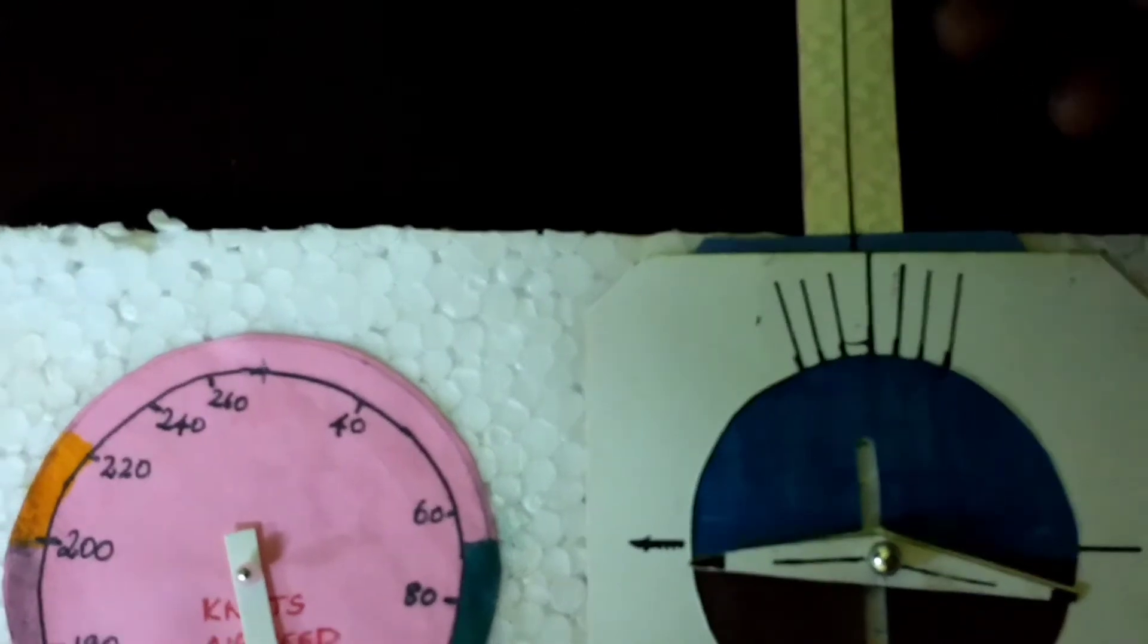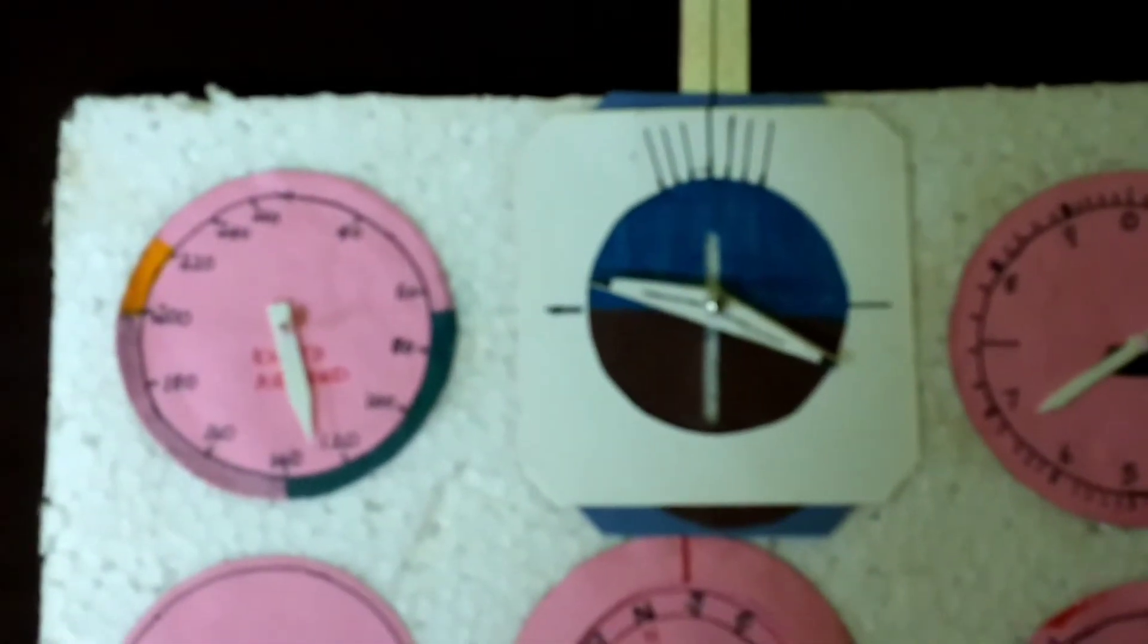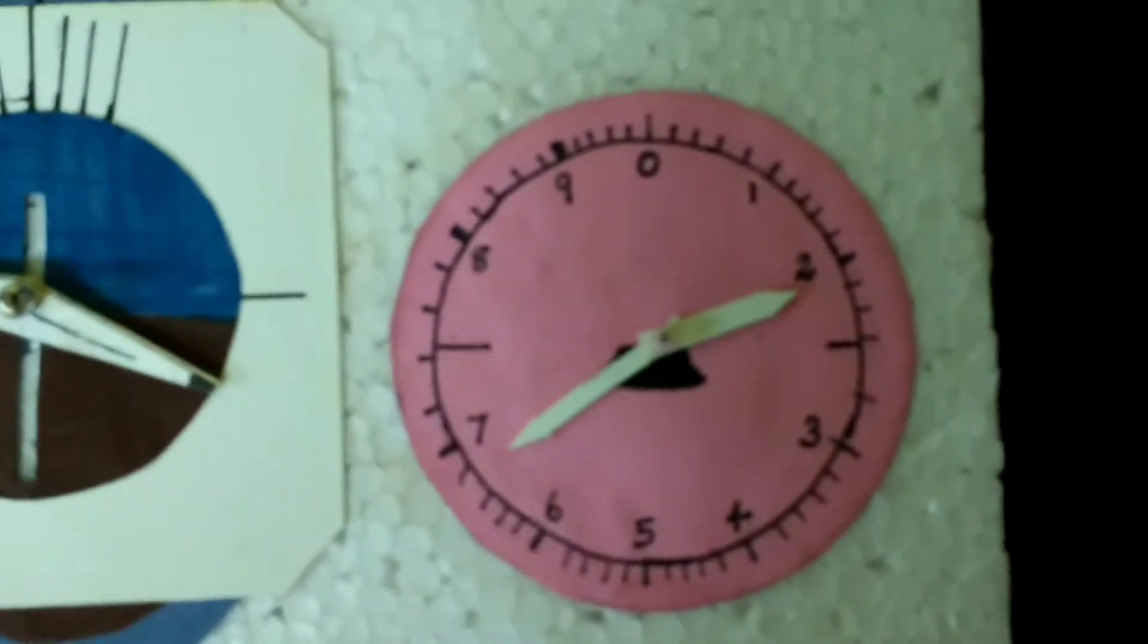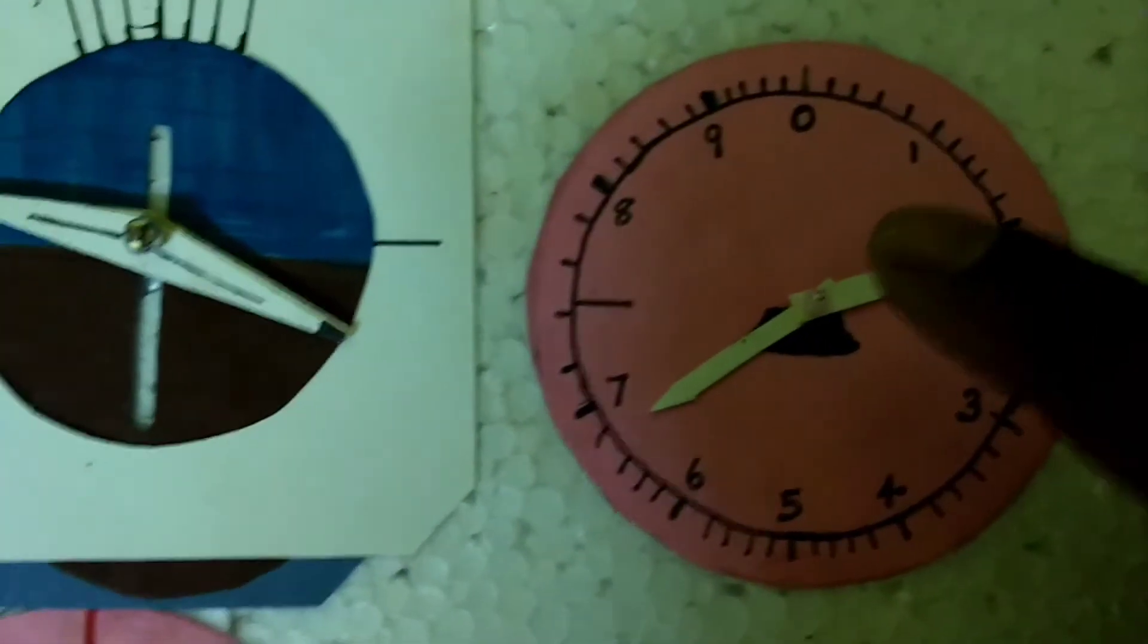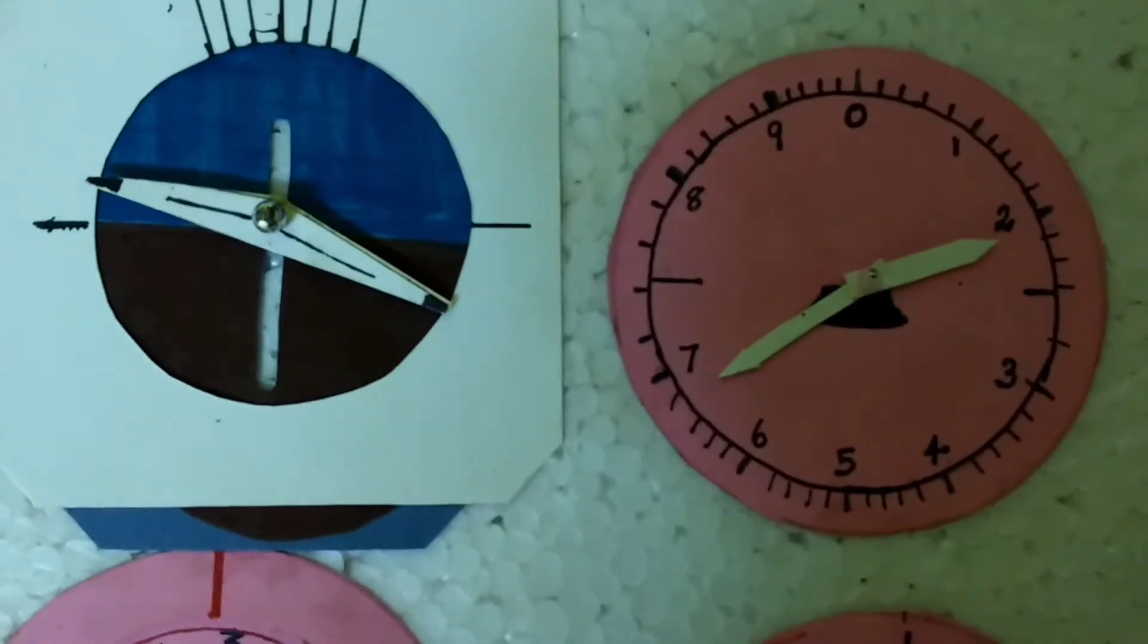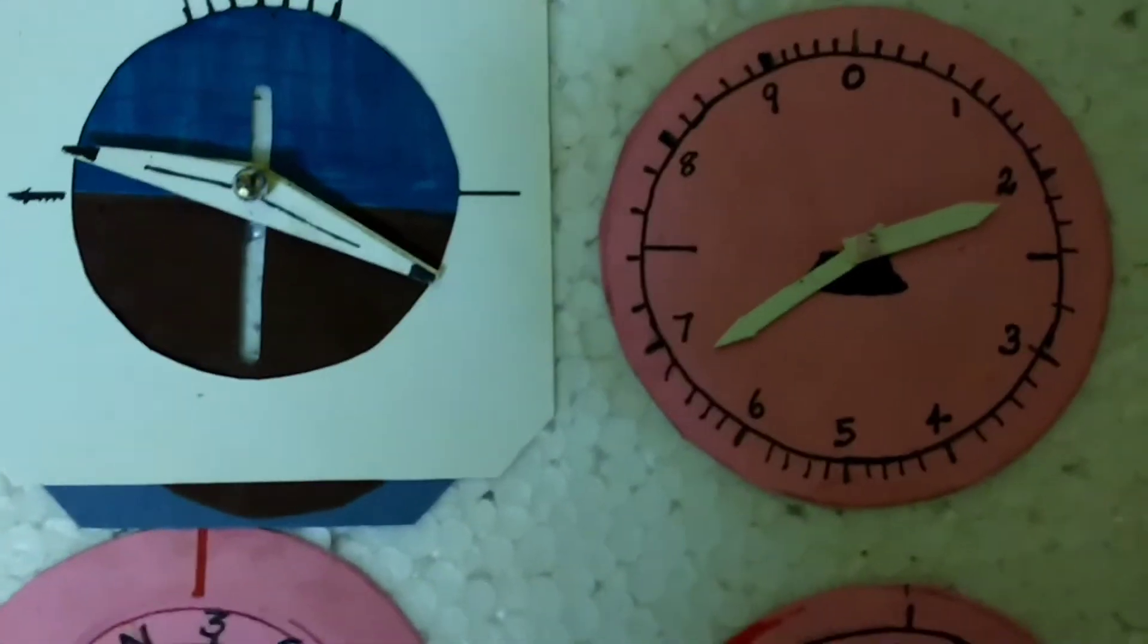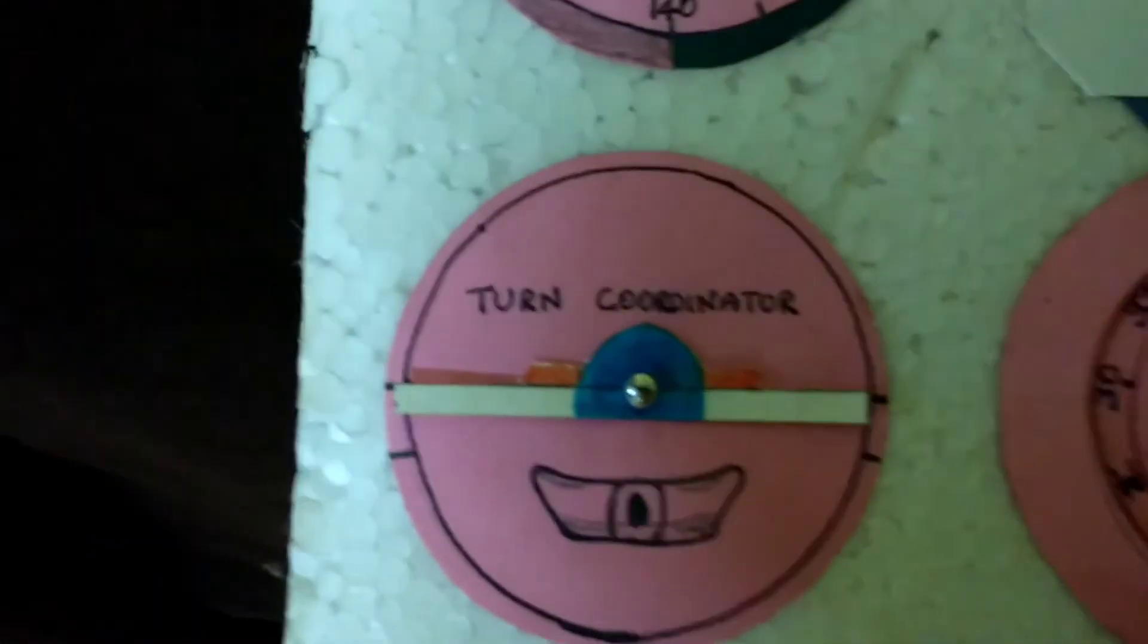The next instrument is the altimeter. We have a short hand and a long hand. The short hand reads in thousands, the long hand reads in hundreds. You can adjust and reset it, and you can practice.